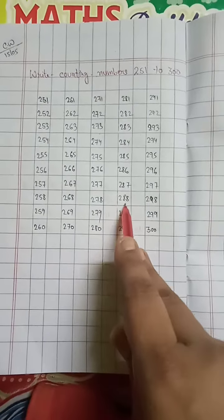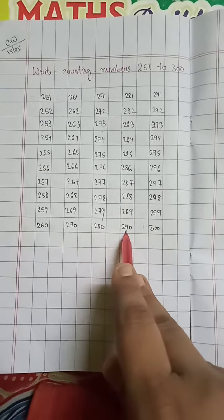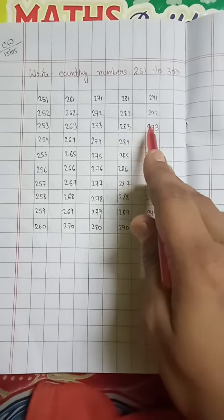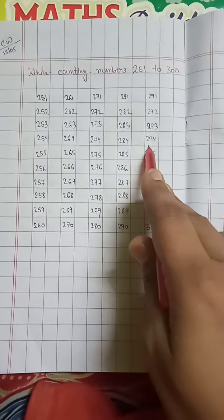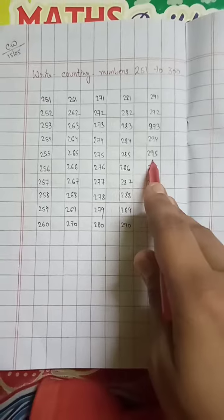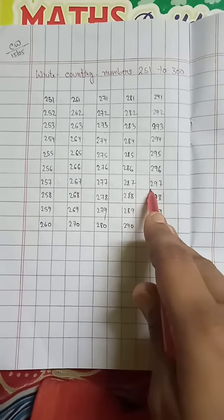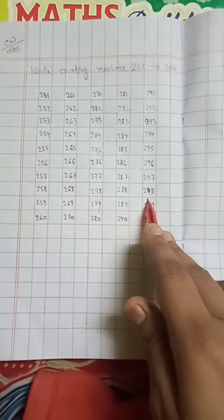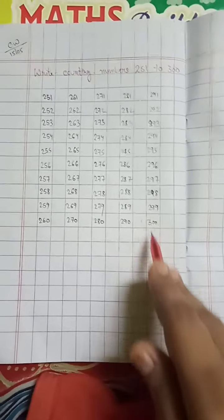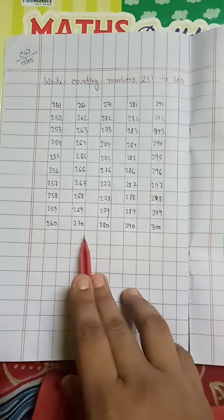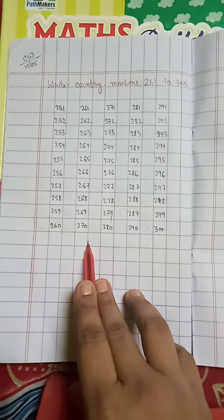288, 289, 290, 291, 292, 293, 294, 295, 296, 297, 298, 299, 300. Students must try to write and learn. Ok, thank you.